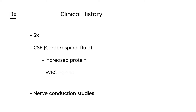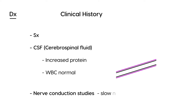Nerve conduction studies will show slower nerve conduction velocities, which makes perfect sense because myelin's primary function is to help impulses travel faster. When demyelination occurs, those impulses travel more slowly. Slow nerve conduction speeds on these studies are exactly what you would expect to see in demyelination.